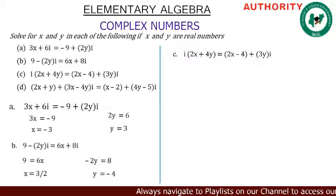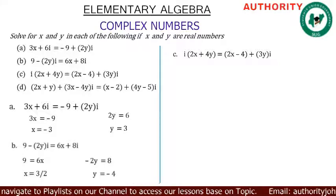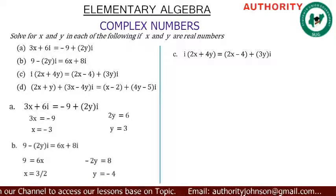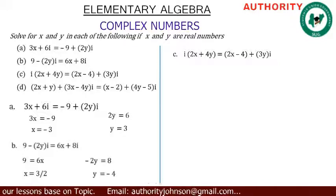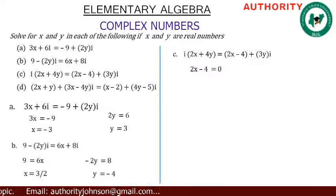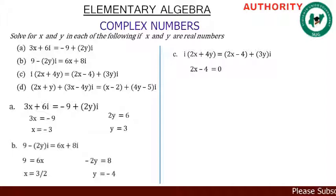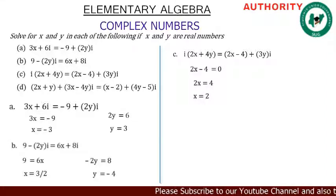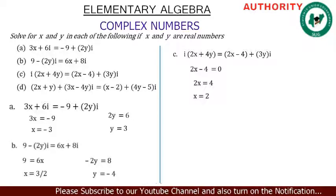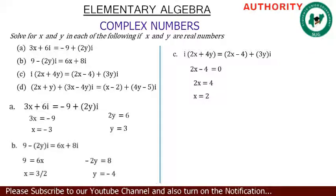For part c: i times (2x plus 4y) equals (2x minus 4) plus 3yi. The real part on the left-hand side is zero, and the real part on the right-hand side is 2x minus 4. Equating them: 2x minus 4 equals zero. Taking minus 4 to the other side gives 2x equals 4, so dividing by 2 gives x equals 2.